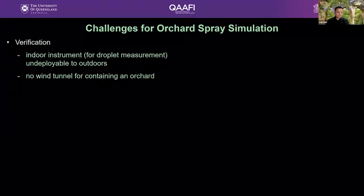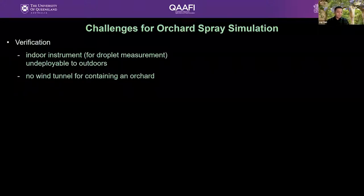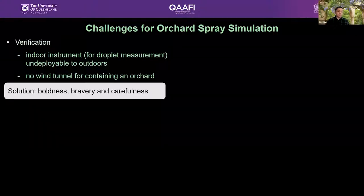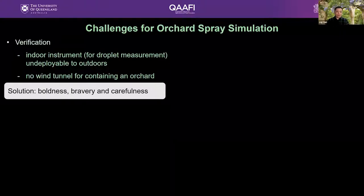Another major challenge is verification — how to verify that the digital twins match reality. For indoor experiments, you can have a very well-controlled environment such as a wind tunnel, stable sprayer operation, and sophisticated equipment to measure droplet size and movement. But for outdoor investigations these are unavailable — for example, we cannot place an entire orchard or even a single tree into a wind tunnel. Our solution required boldness and bravery; when facing this challenge initially we were not quite sure it would work, but we decided to take the risk.